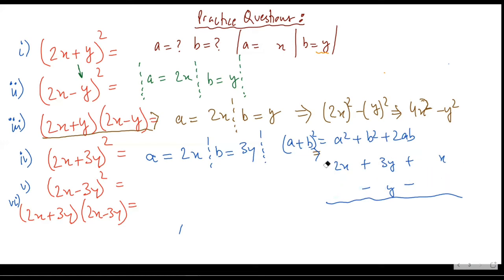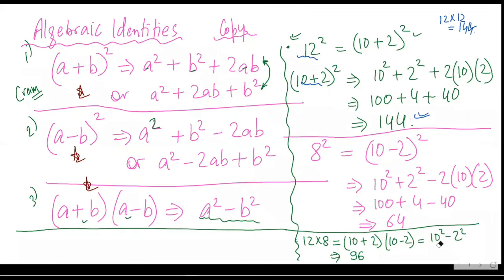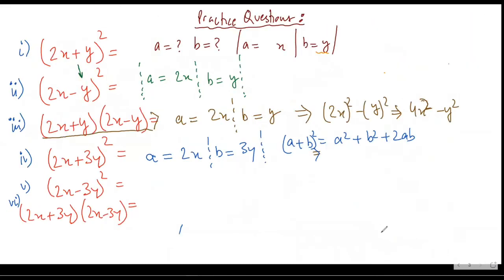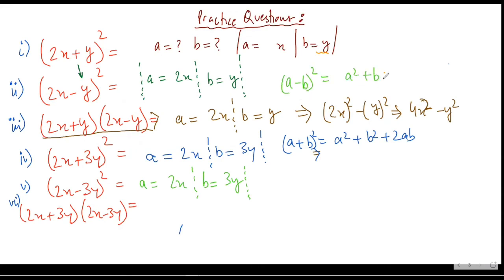Let's move to the fifth question. In all these questions, what you need to identify is which identity should I apply — this one, this one, or this one. Once you have done that, write your a and b. So in this question, my a is 2x and my b is 3y. Please remember your b is 3y, not minus 3y — don't make that mistake. The identity I'll be using is (a - b)² = a² + b² - 2ab.